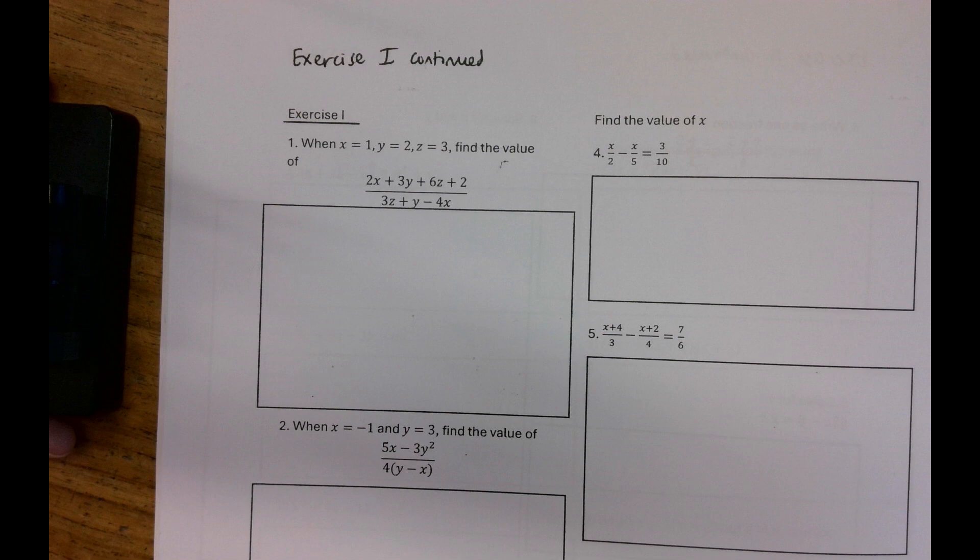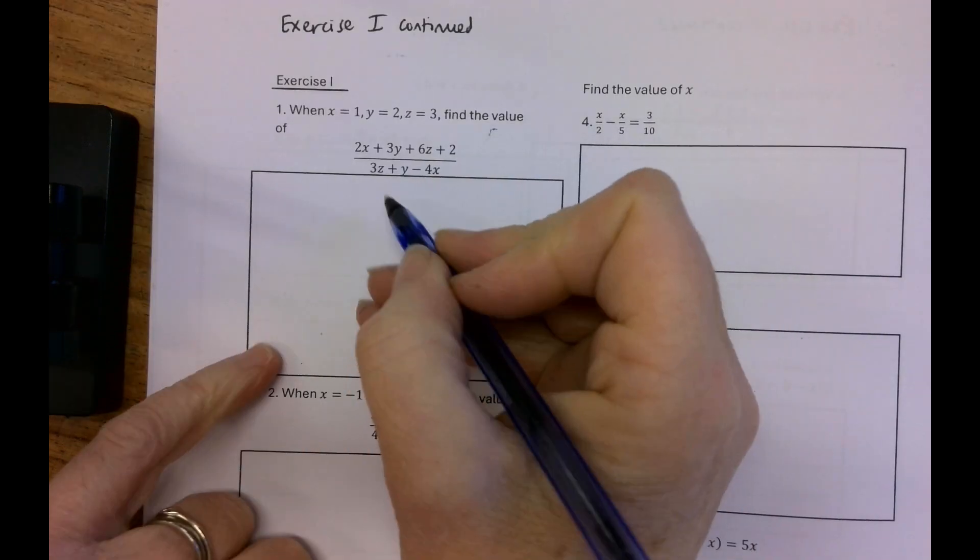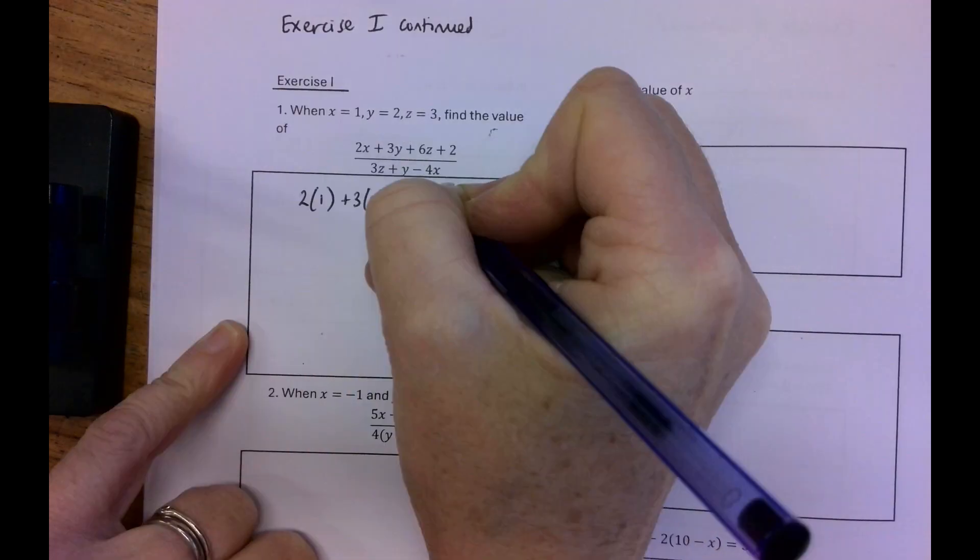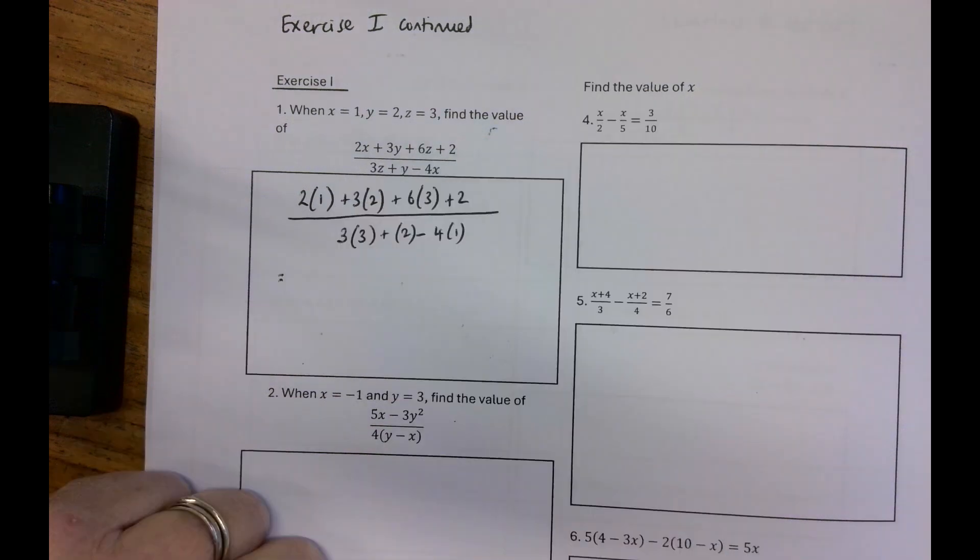Okay so starting off here when x equals 1, y equals 2 and z equals 3, find the value. So this is an evaluation question. What I'm doing is I'm subbing in the values for x. 2x by 3 plus 2 all over 3z plus y which is 2 minus 4x which is 1.